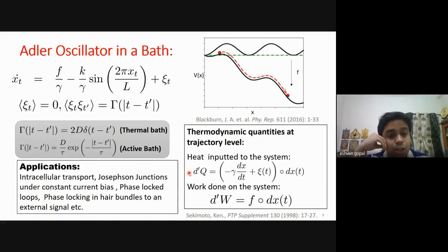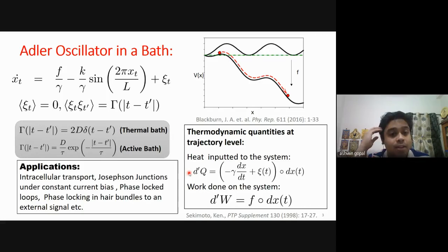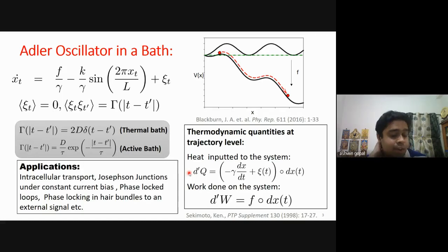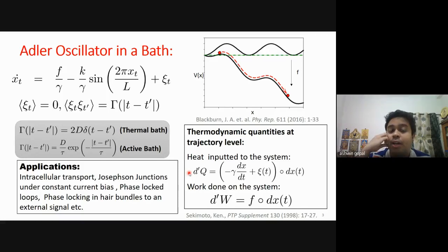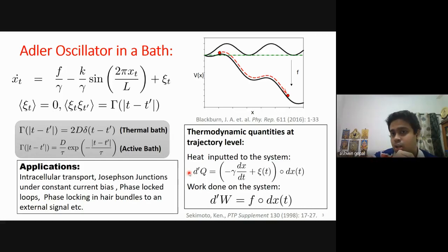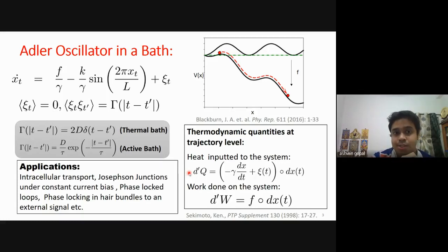When tau goes to zero, the correlation time vanishes and we recover the thermal bath limit — the system becomes memoryless. When tau tends to infinity, the amplitude of the noise goes to zero and the system is infinitely correlated, corresponding to the deterministic limit. Understanding the bifurcation diagram is therefore important in this model.